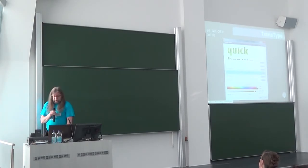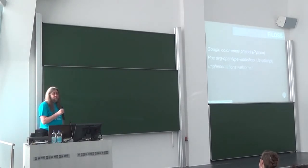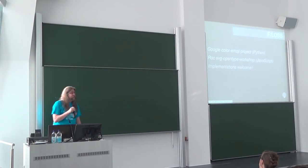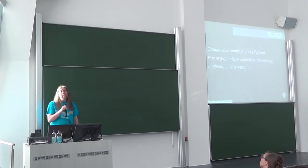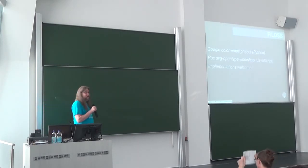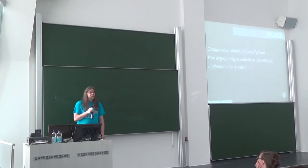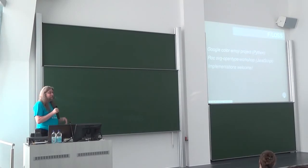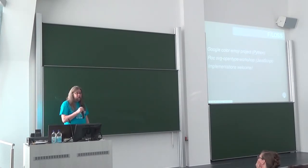So far these are all commercial. Google has a Python script which lets you stick some PNGs together to make their format - it's okay but not exactly a development environment. Robert O'Callaghan has a thing called SVG OpenType Workshop which runs in a browser - you load in a font, load in some SVG, it glues them together and spits it out, quite clever but again not exactly ideal. Open source implementations would be wonderful for this sort of stuff. There's a lot of expressive power here - let's not leave it in the hands of people with their own agendas.